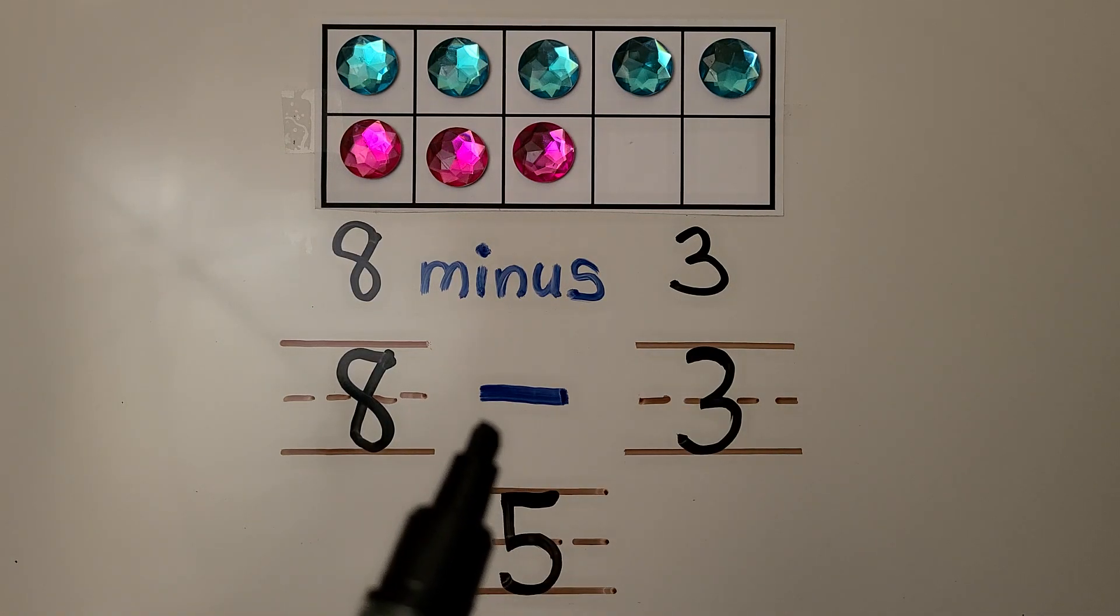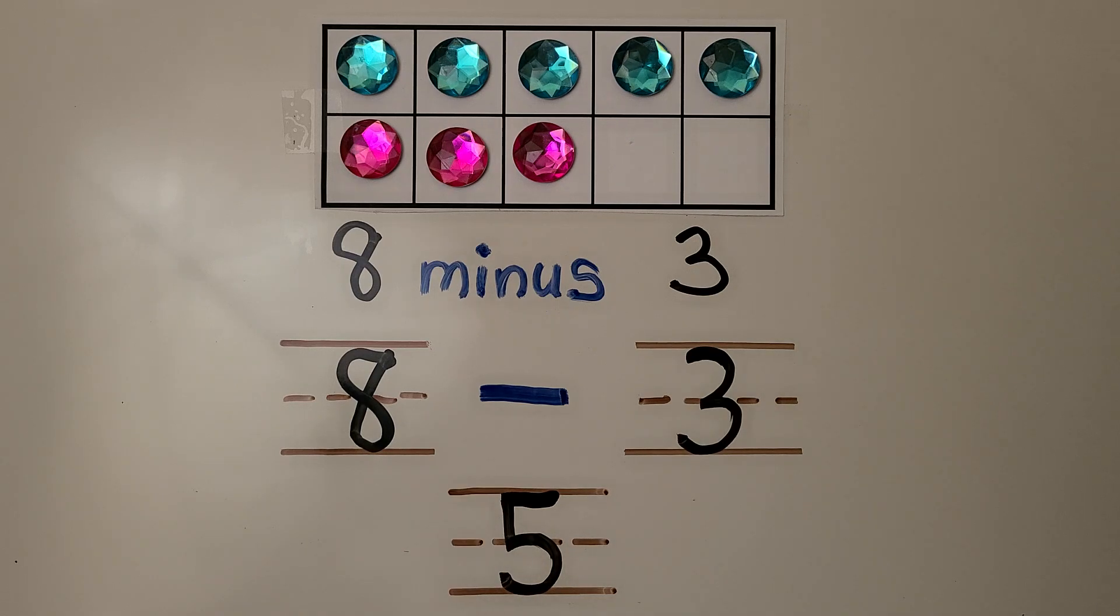This is a minus sign. It means take away. We have 8 take away 3. We can take 8 apart into a 3 and a 5. When we take the 3 away, there are 5 left.